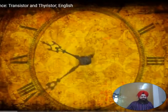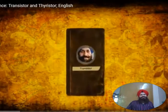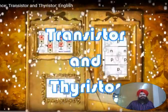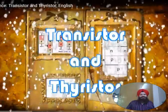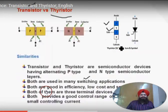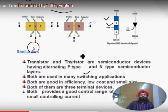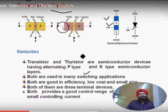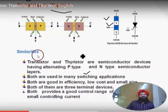Now we will compare the transistor versus the thyristor — the similarities and differences. The transistor may be PNP or NPN. The first terminal is called emitter, second is base, and third is collector. The base layer is very thin as compared to the emitter and collector.